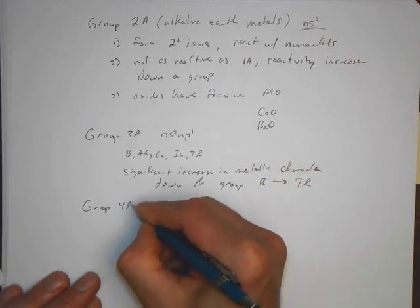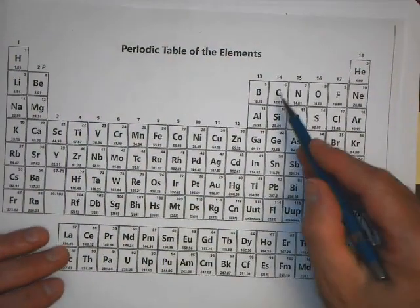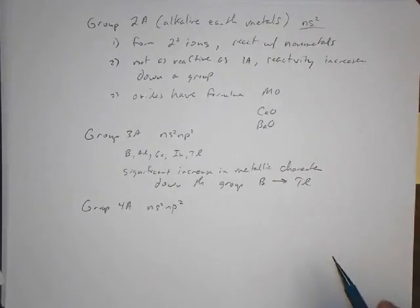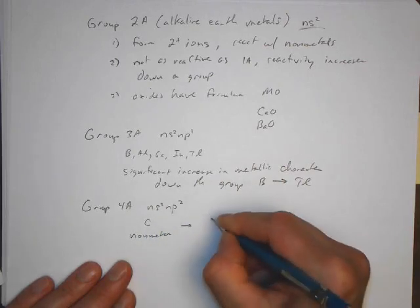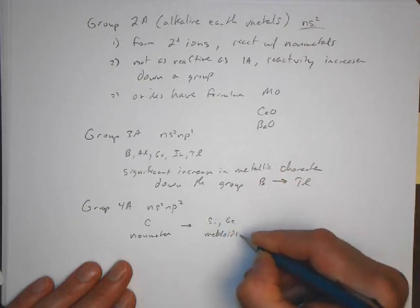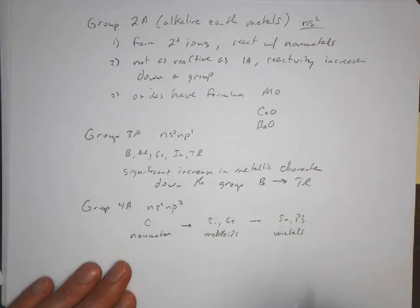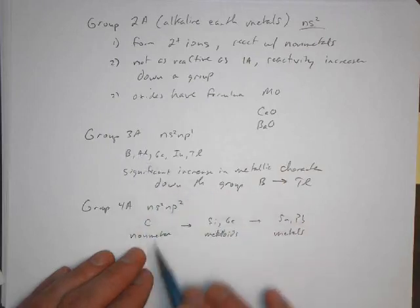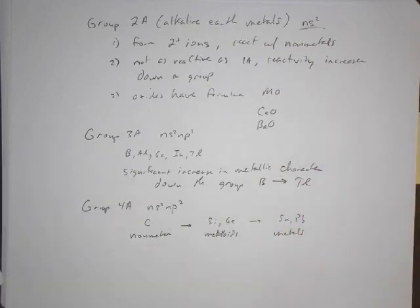Group 4A, where we have NS2 and P2. Here we're talking about carbon, silicon, germanium, and so on. We have carbon, which is a nonmetal, going to silicon and germanium, which are metalloids, to tin and lead, which are metals. Very similar to what we saw up here. The range is even larger - carbon is very clearly a nonmetal, tin and lead are metals. In your experience, you've experienced tin and lead, I'm sure.